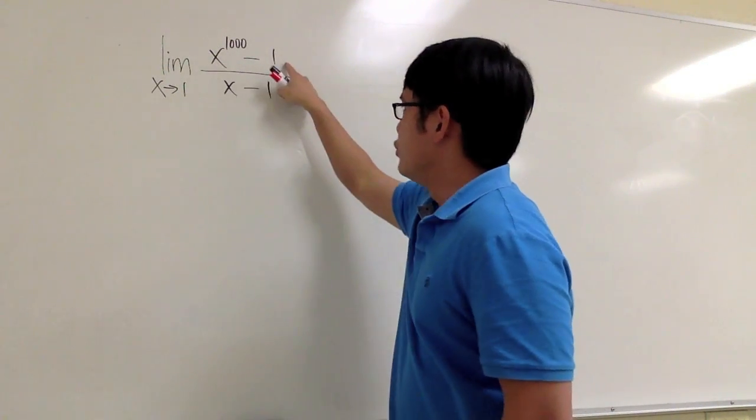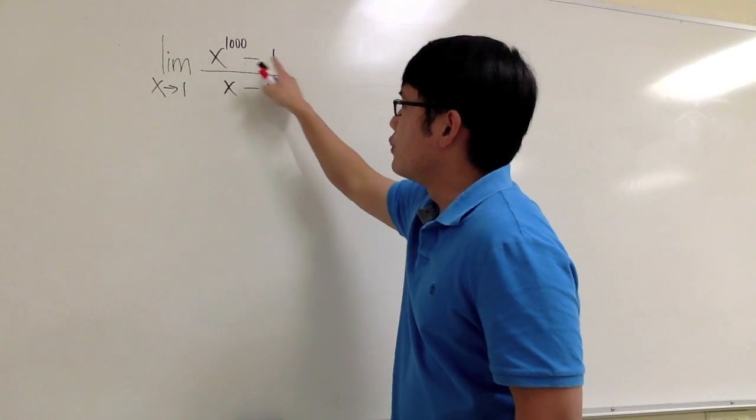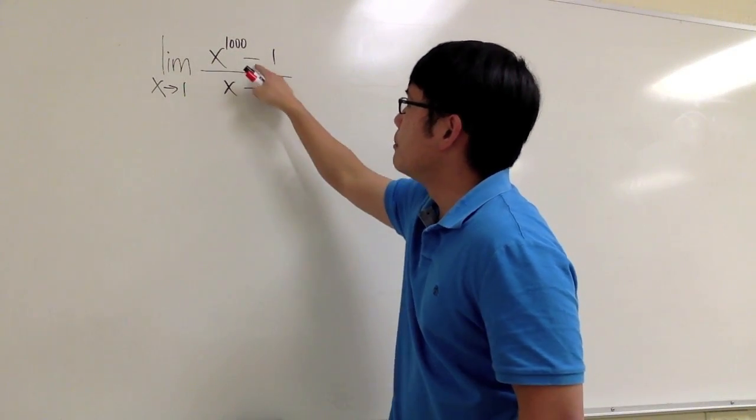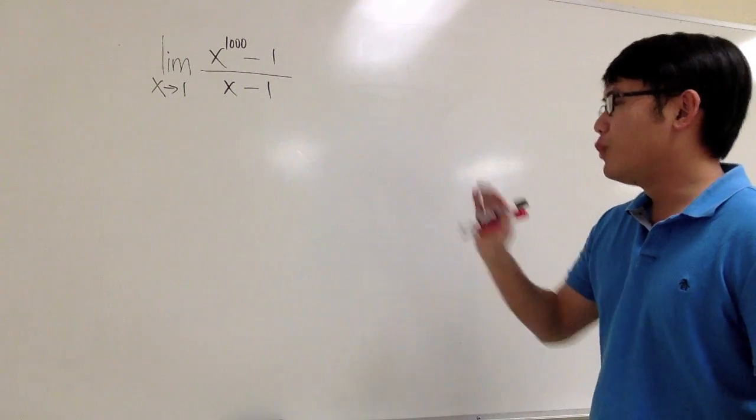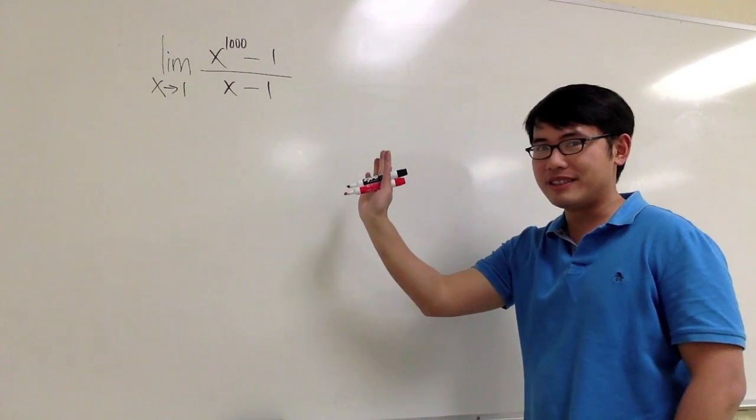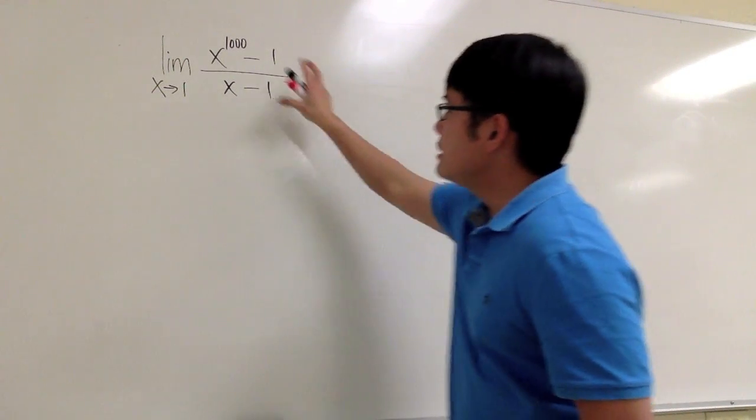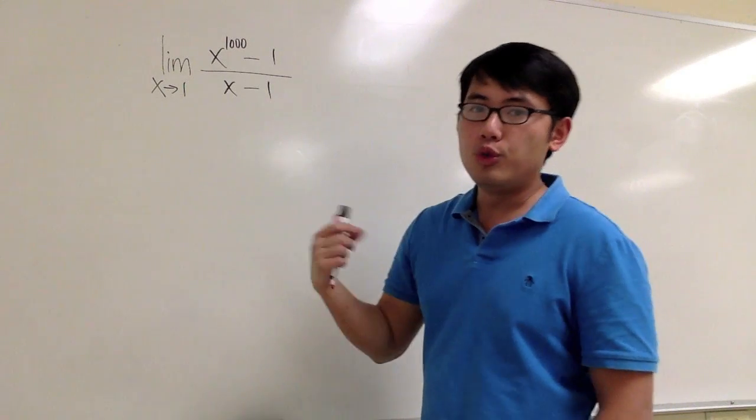However, by looking at the numerator, it's pretty hard to factor out x to the 1000 power minus 1. But it's possible, it's just really hard. We are not going to do that. We are not going to factor this out, because this particular limit actually represents something.